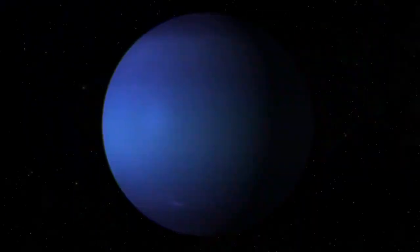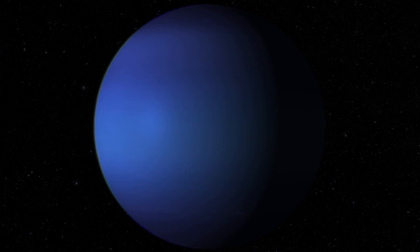Voyager 2 also discovered Neptune's peculiar magnetic field, tilted and offset from its center, challenging existing models of planetary magnetism.